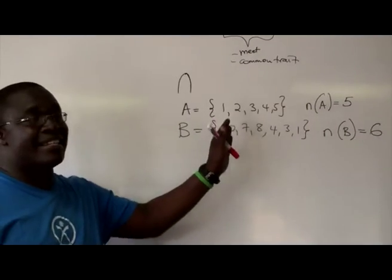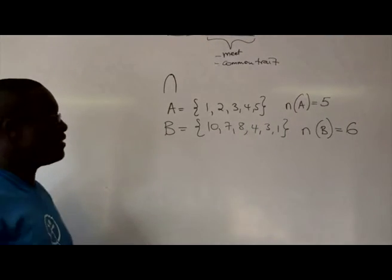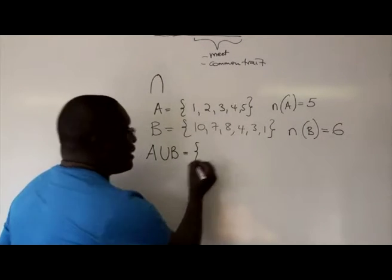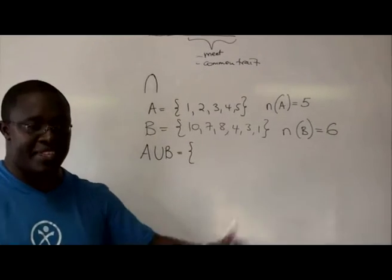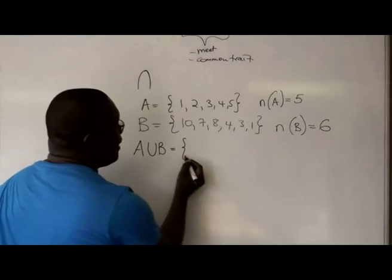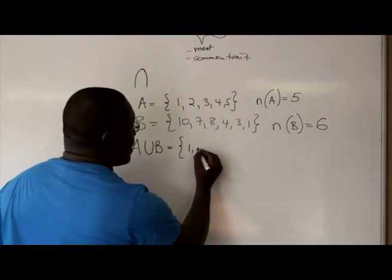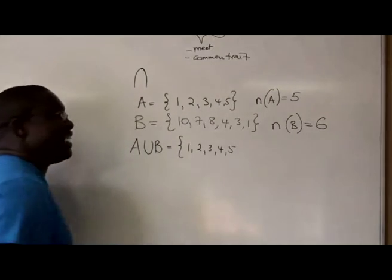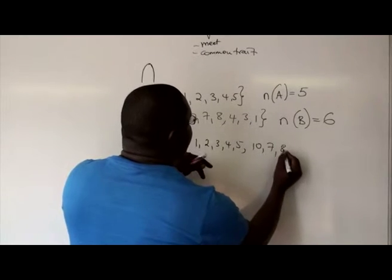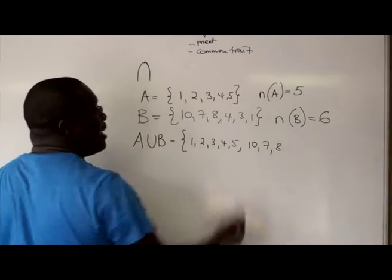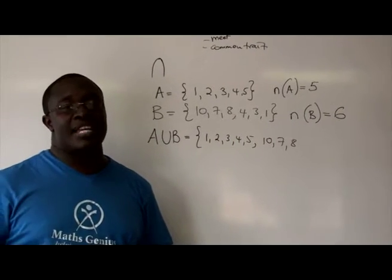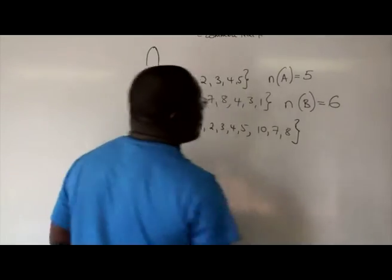Now, before I go on to intersection, I'm just going to do the union as well. So A union B is equal to, remember union is combining collectively, taking everything that is in A and everything that is in B and putting it together. So A union B is equal to, you take these ones, 1, 2, 3, 4, 5. This is everything that is in A. Now, remember you're combining, you're uniting with B. So B would be 10, 7, 8, 4, and 3, and 1 have already been included when we put in the elements of A. So we don't have to redo it because that will be duplication.